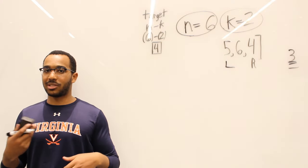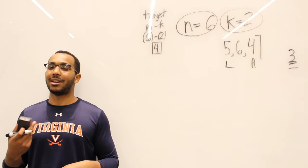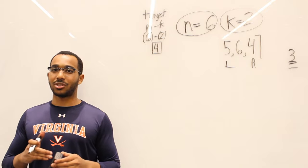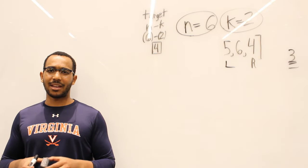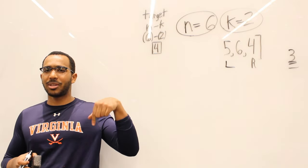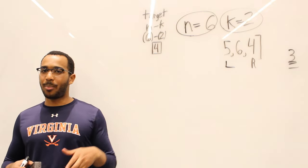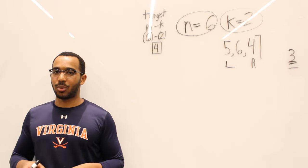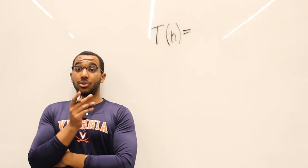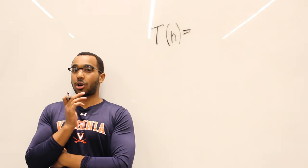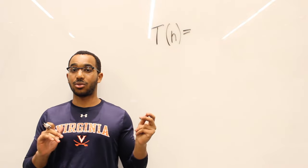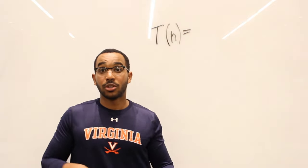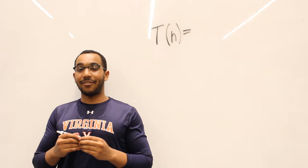Let's calculate the runtime right now. I don't have notes for this — I'm doing it on the fly. What we're going to do is draw a recurrence and analyze it using the tree method. So T of N: we need to think about what size of input we call the function on again.